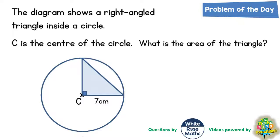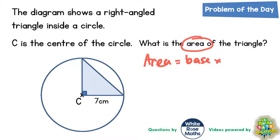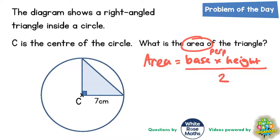The area of a triangle is found when you multiply the base by the height of the triangle and then divide all of that by 2. The height here has a specific name — the perpendicular height — which we'll talk about in a second. So we need the base and the height of the triangle.